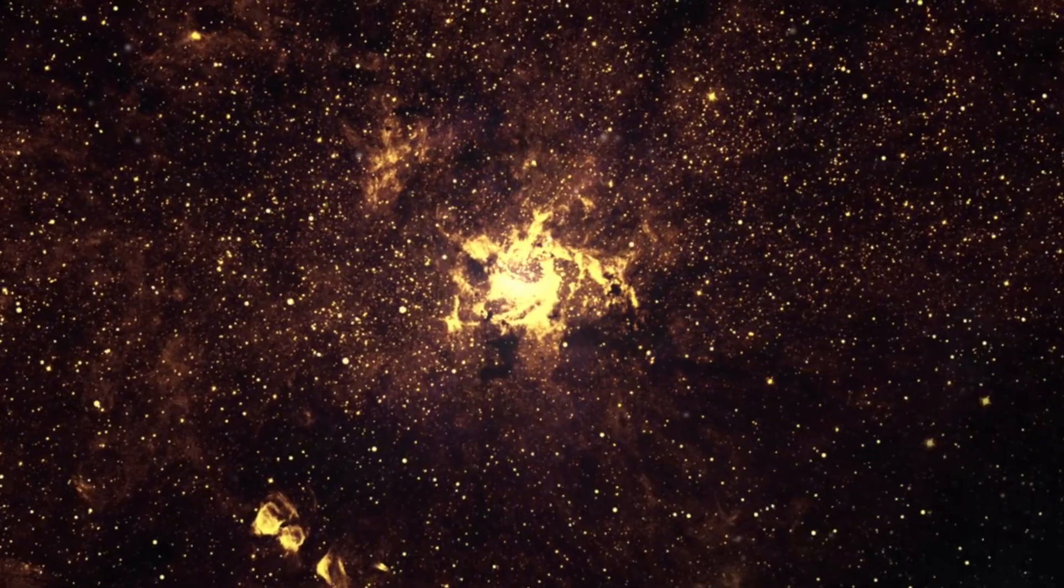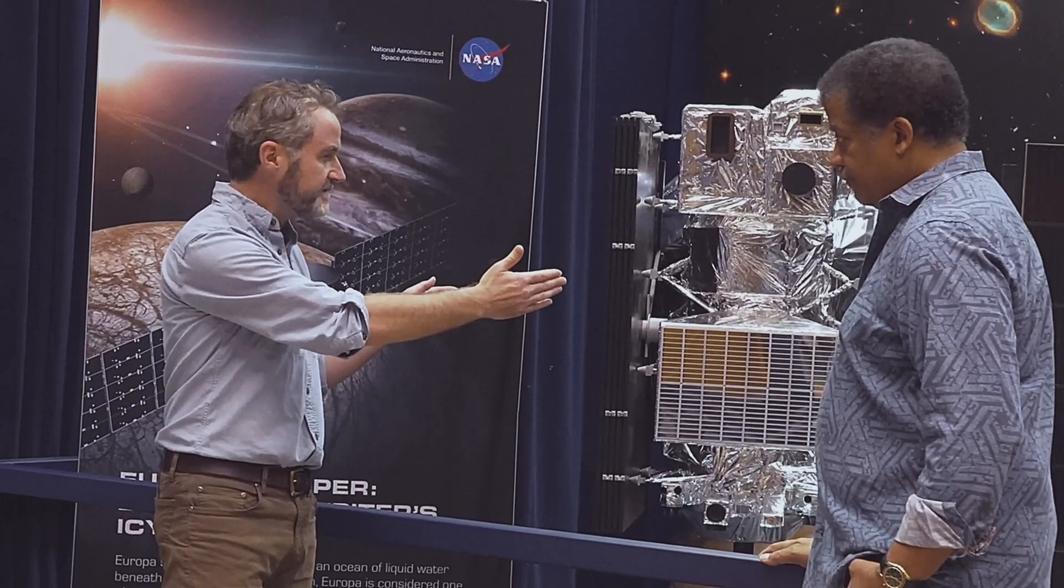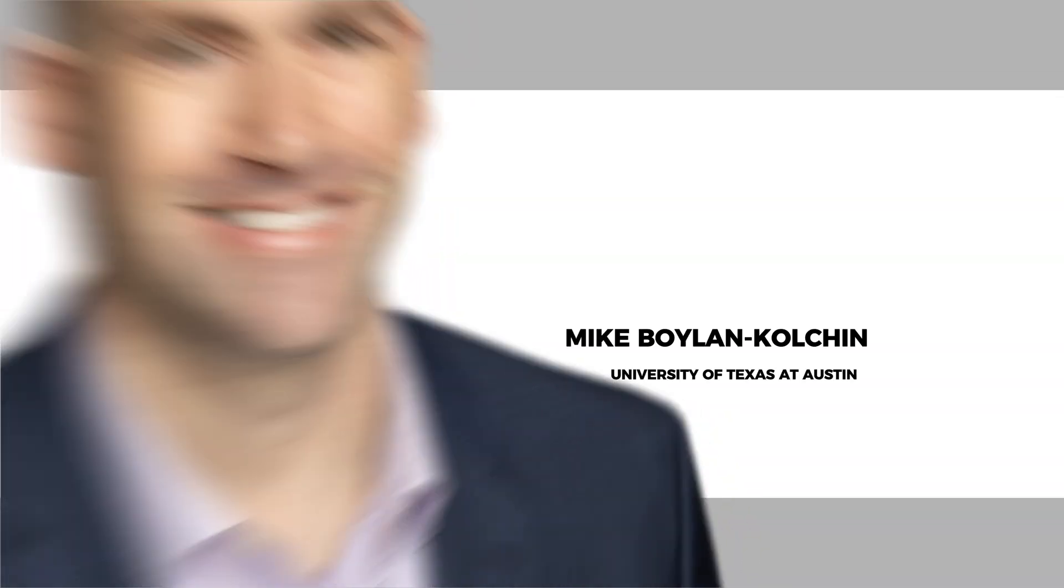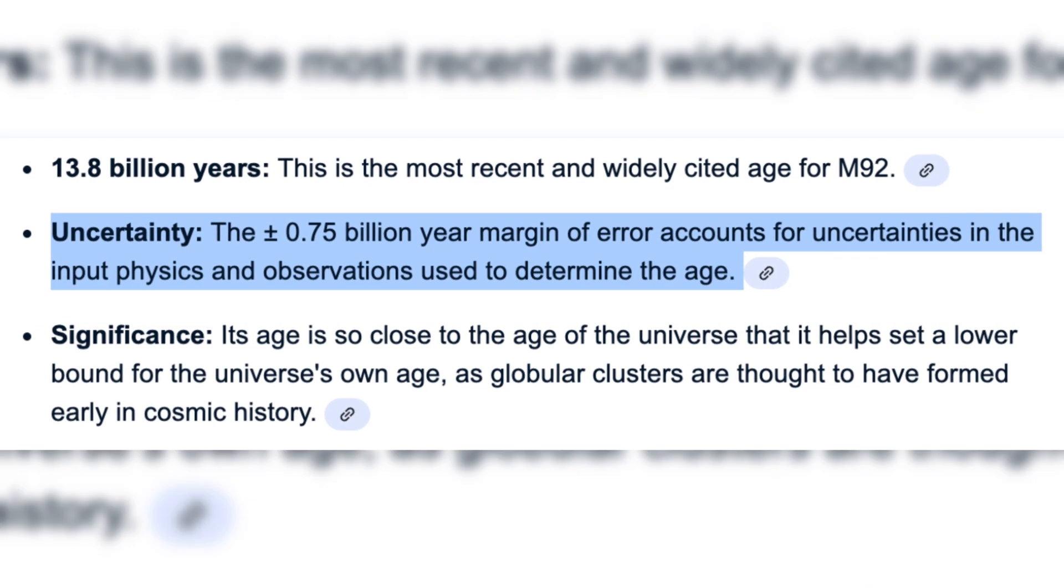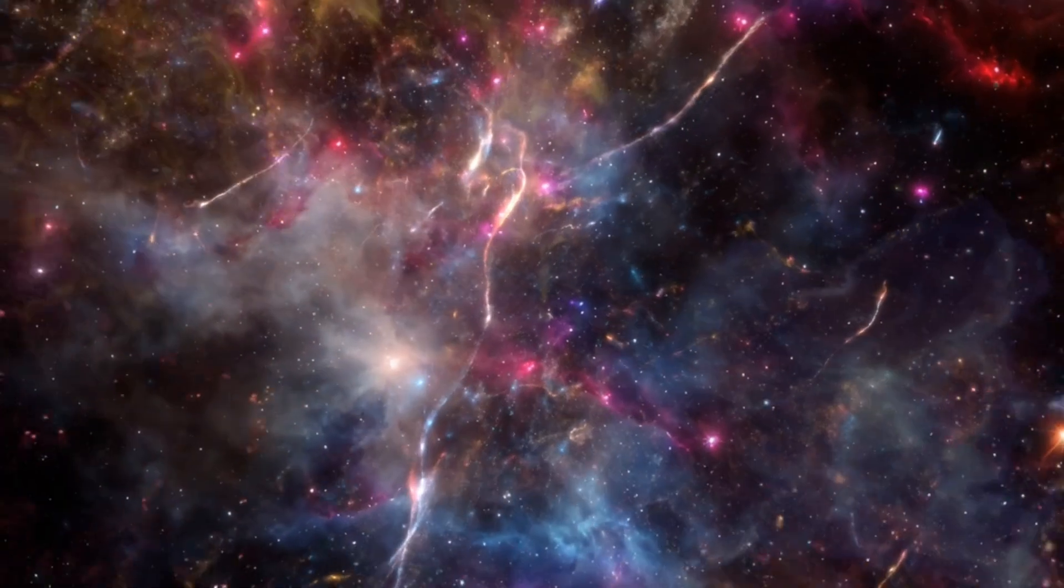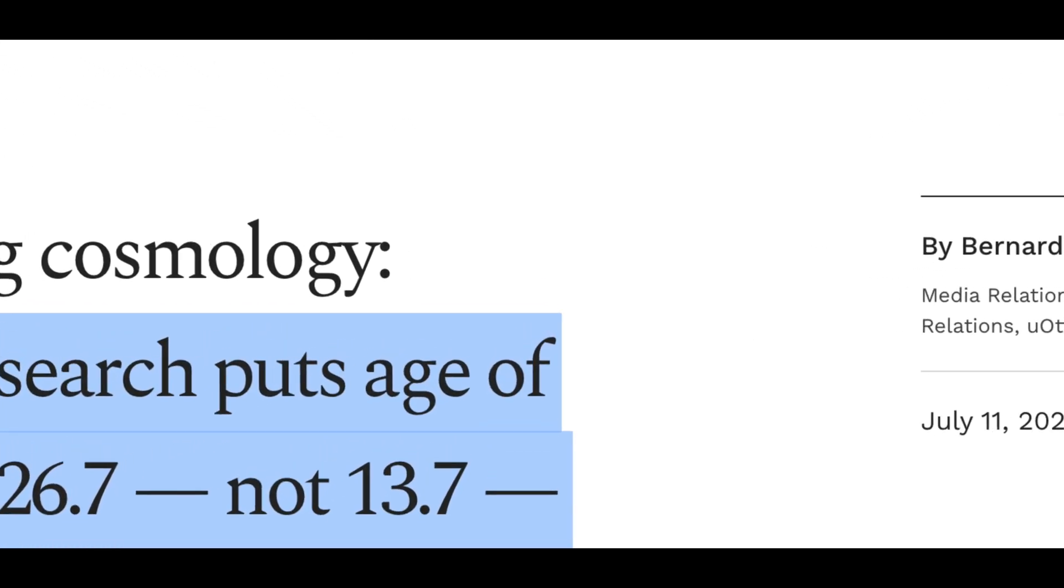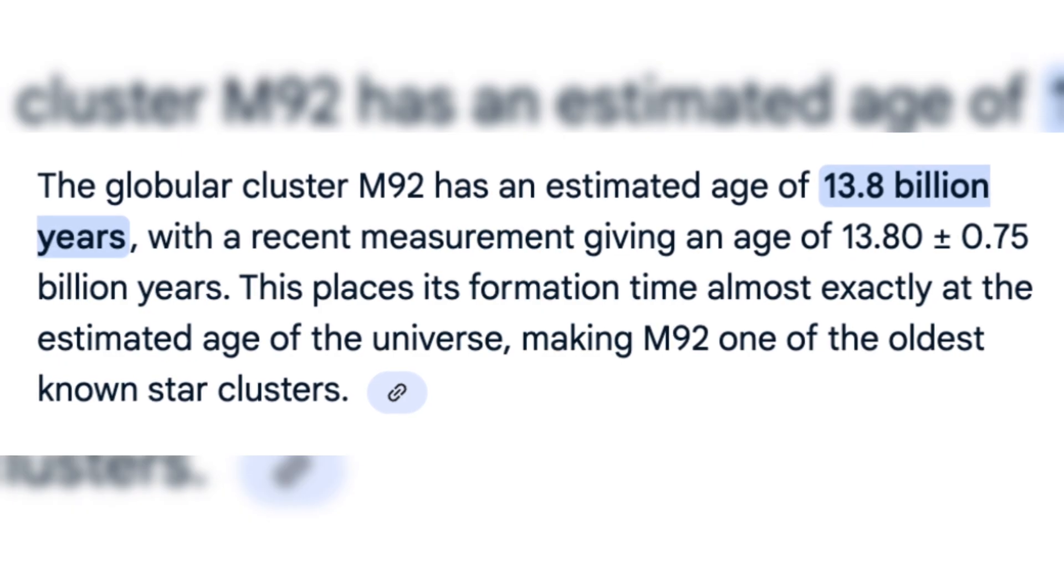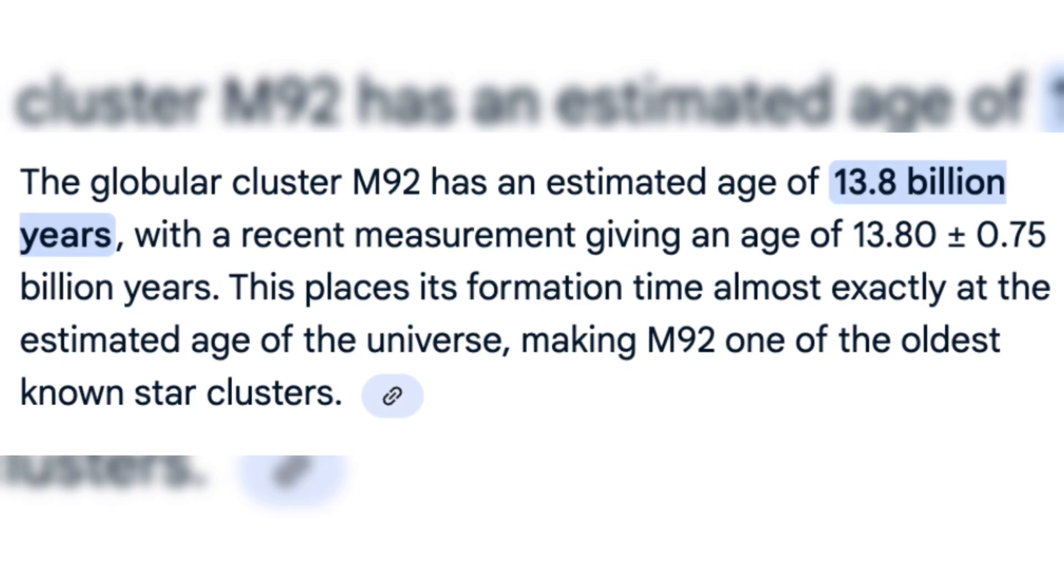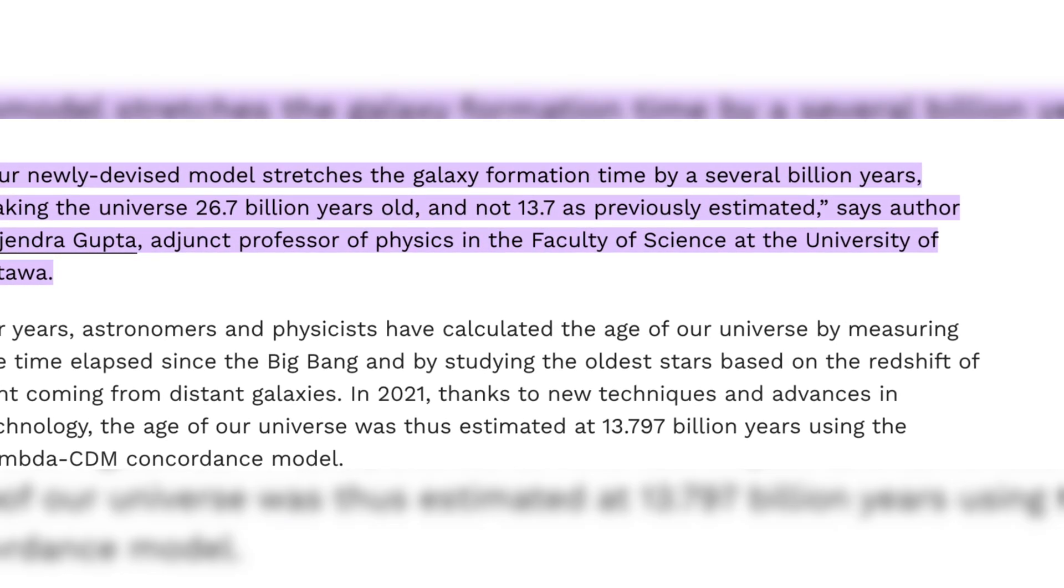One approach to resolving that tension is to accept a different age for the universe. In a recent discussion on cosmic age, cosmologist Mike Boylan-Colchin from the University of Texas at Austin emphasized a critical point regarding the so-called Hubble tension. He noted that if we take this discrepancy seriously, it raises fundamental questions about our understanding of the universe's age. This comes in light of a provocative study published by the University of Ottawa, which posits that the universe may not be 13.8 billion years old as currently believed, but instead could be as much as 26.7 billion years old.